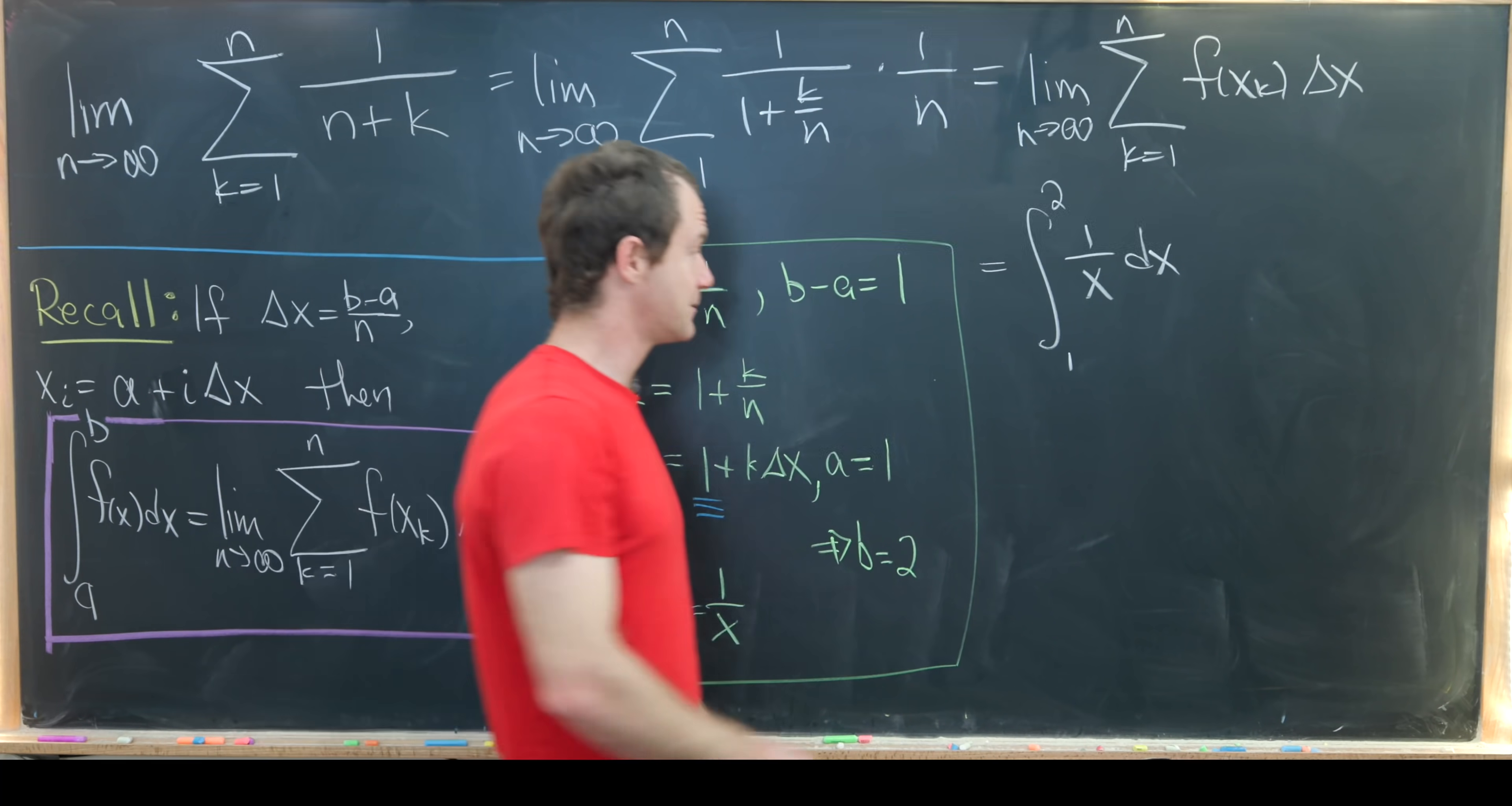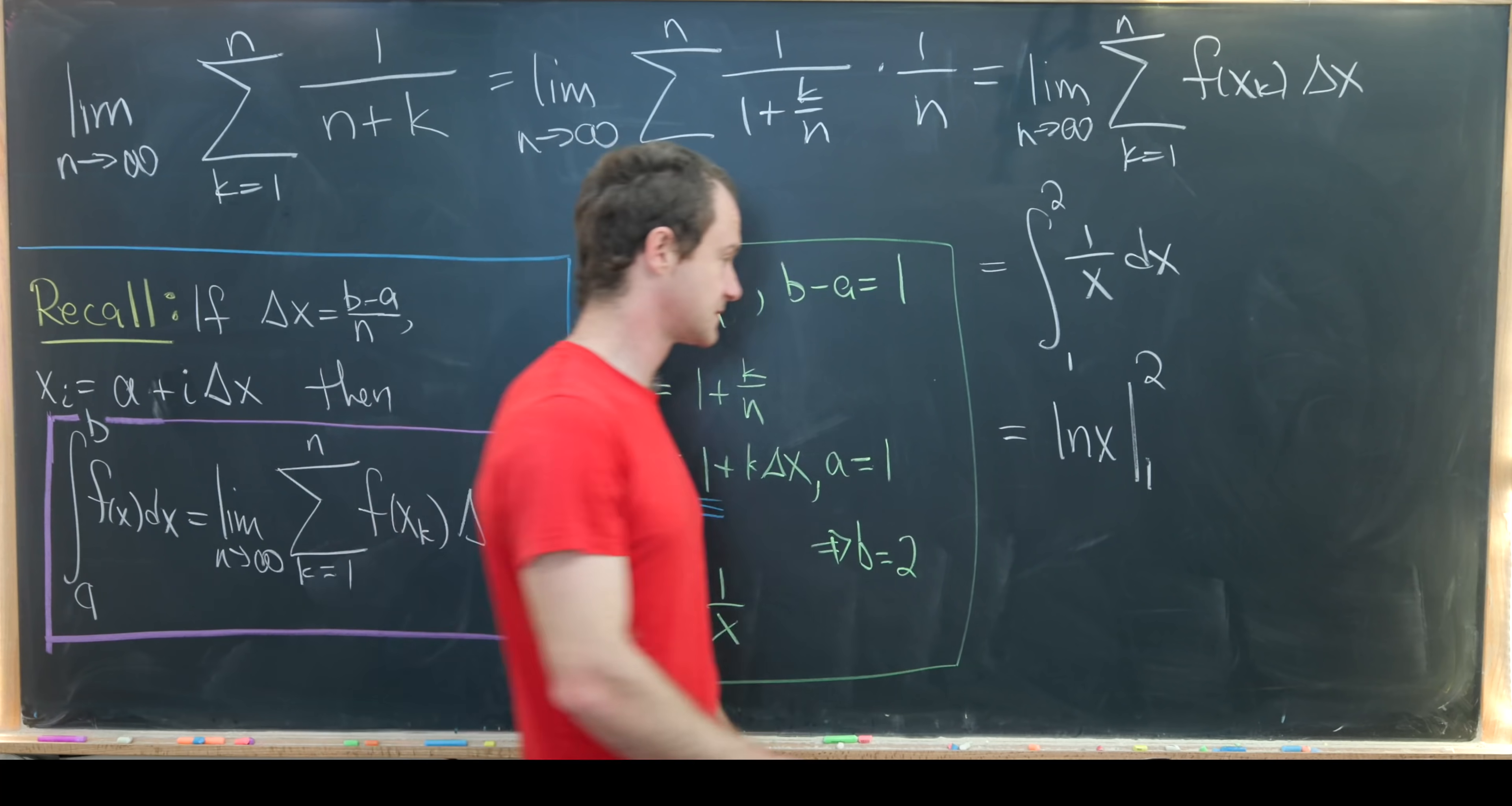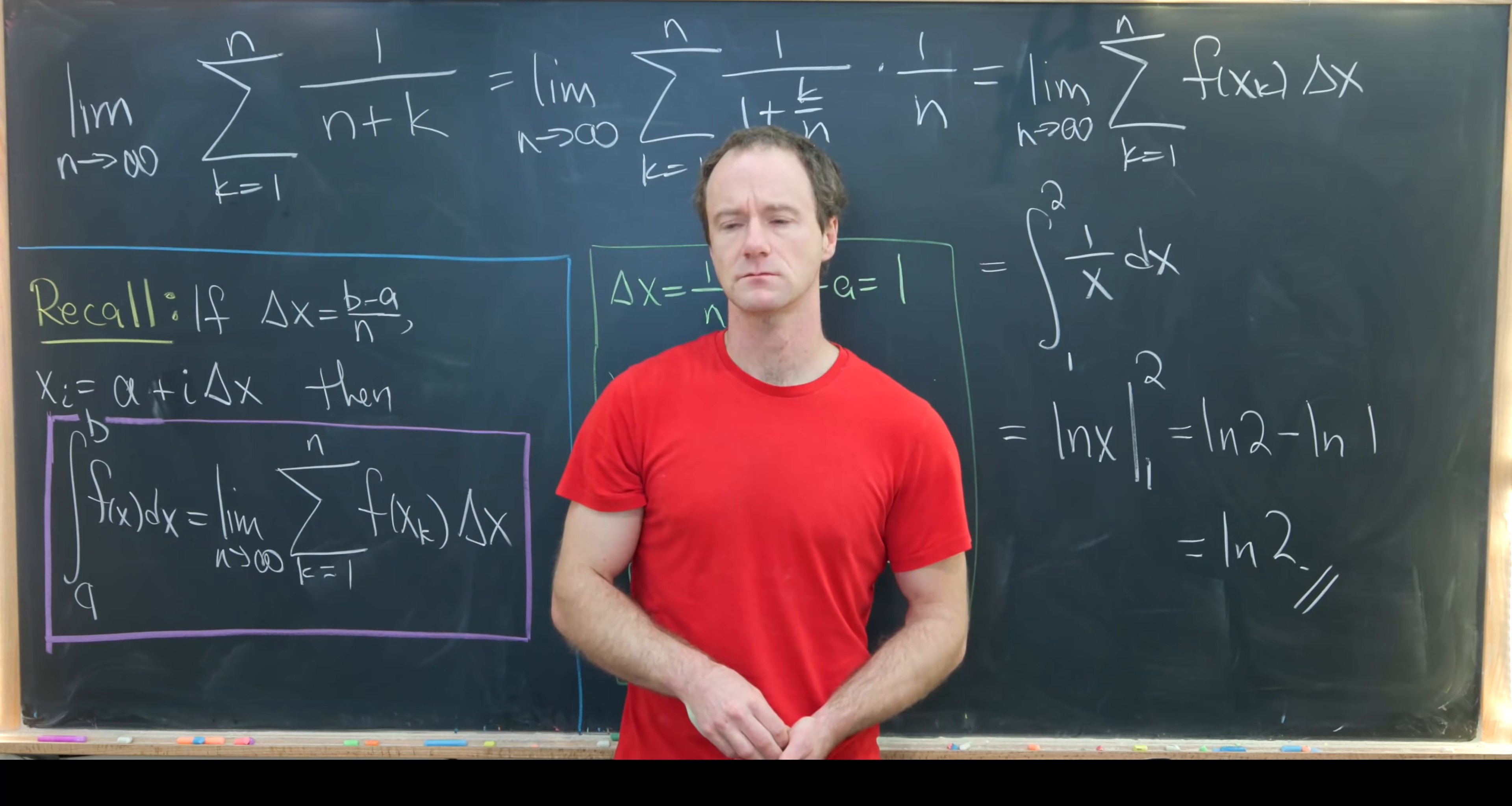Now that's fairly simple. We can take the antiderivative that gives us the natural log of x evaluated from 1 to 2. We don't need to worry about an absolute value there because we're integrating over positive real numbers. And then we get the natural log of 2 minus the natural log of 1. The natural log of 1 is 0. So in the end we get the natural log of 2 for this limit.